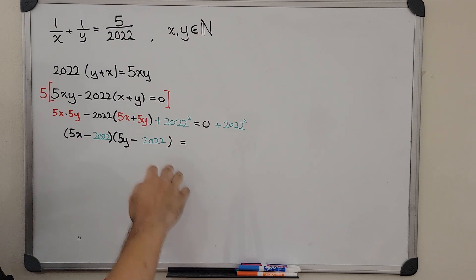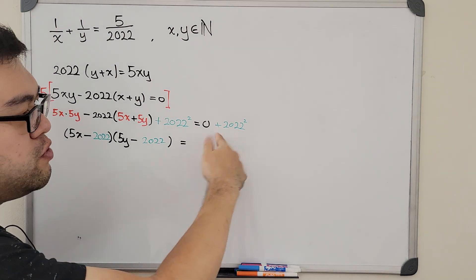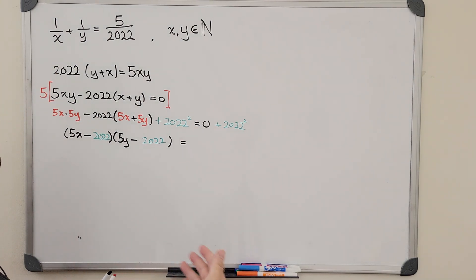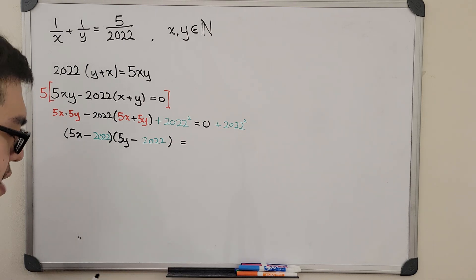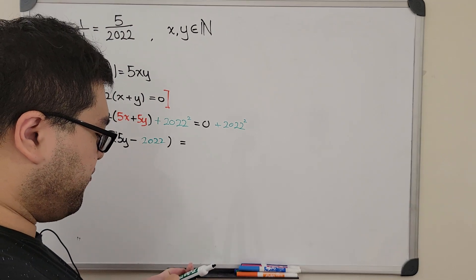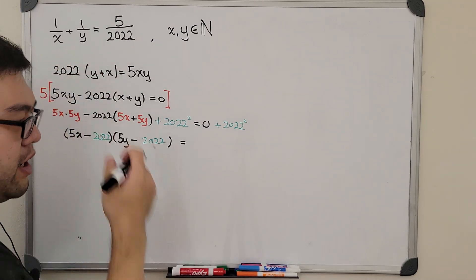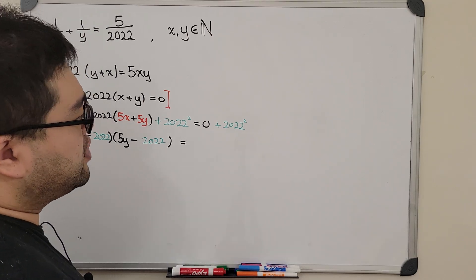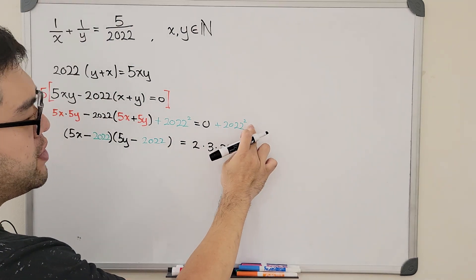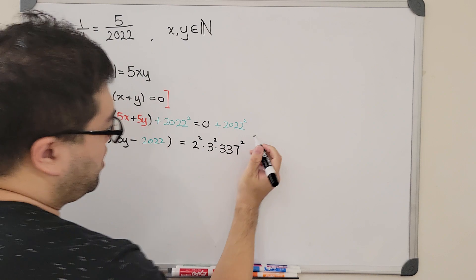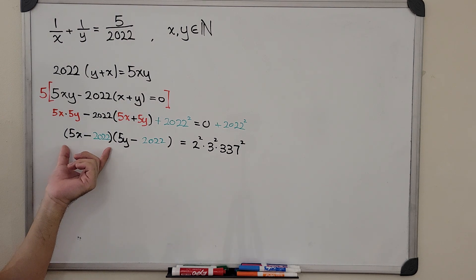The right-hand side is 2022 squared. Since this is a number theory problem, we use unique prime factorization to find the prime factors of 2022. In fact, 2022 equals 2 times 3 times 337 — three distinct prime factors each appearing once. Therefore, 2022 squared equals 2 squared times 3 squared times 337 squared.